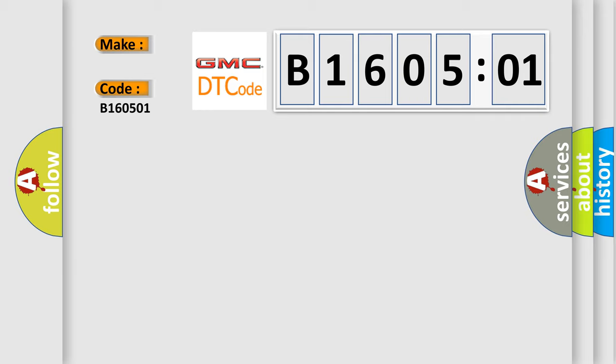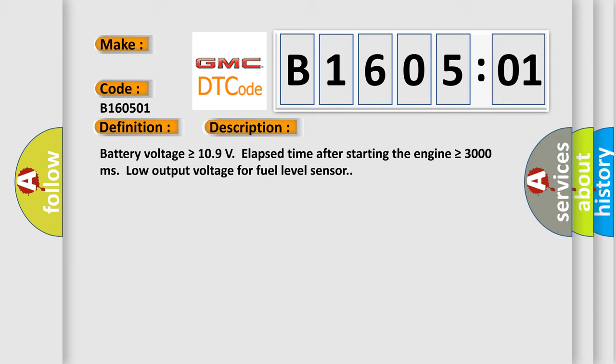Car manufacturer. The basic definition is fuel level sensor A, circuit low. And now this is a short description of this DTC code.